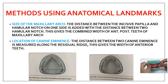The next methods use anatomical landmarks — taking measurements from landmarks on your impression or cast. The first is the size of the maxillary arch: you measure the distance between the incisive papilla and the hamular notch on one side, then add the distance between the two hamular notches. This gives the combined width of both the anterior and posterior teeth of the maxillary arch.